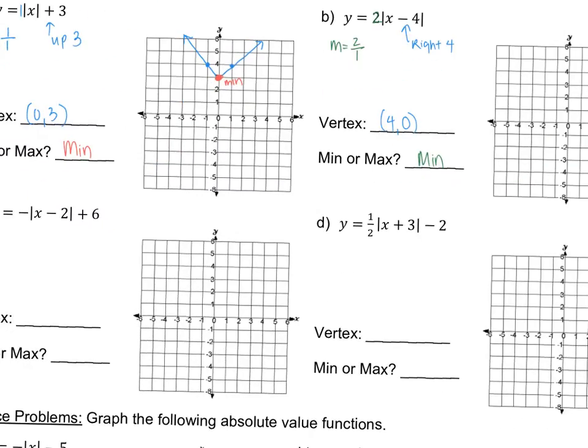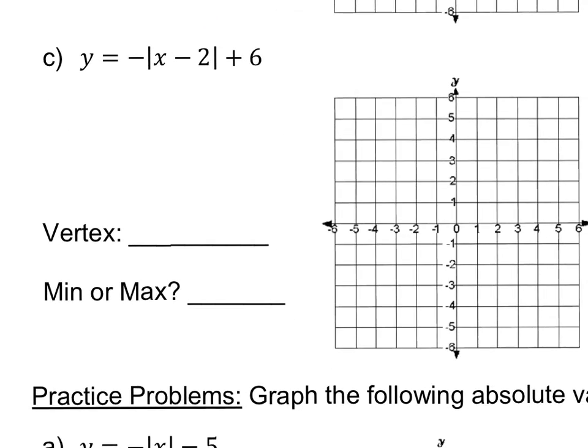Let's take a look at C. C has a minus 2 on the inside, so this means right 2. It also has a plus 6 on the outside, so that means up 6. If I go right 2 from the origin, up 6, I plot my point. That's my coordinate point for my vertex: (2, 6).